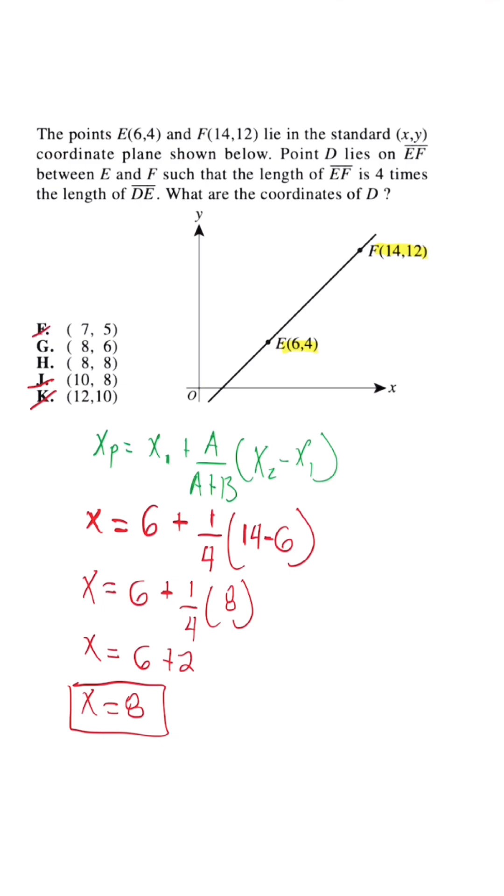So when we repeat this for Y, this is what our equation should look like. So we have Y is equal to 4 plus 1 over 4 times 12 minus 4, and when we simplify this as well, what we're going to get is 4 plus 1 over 4 times 8.